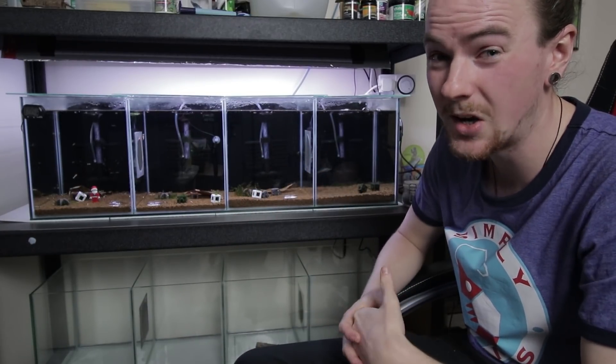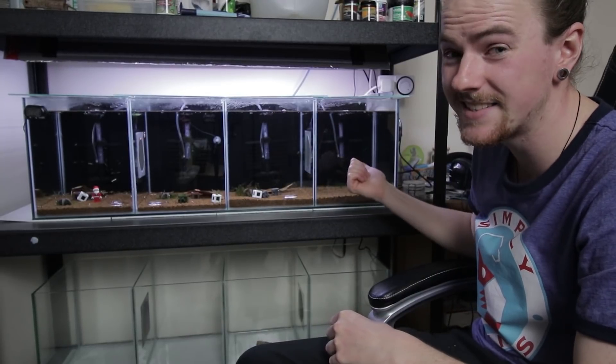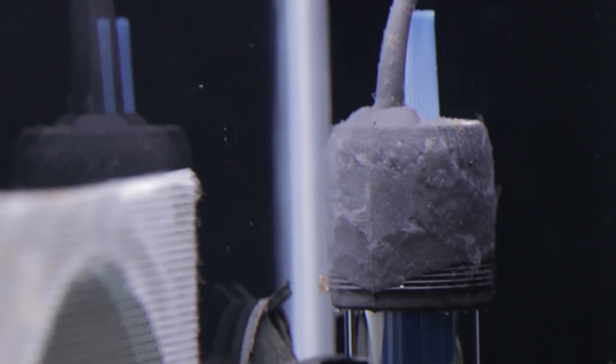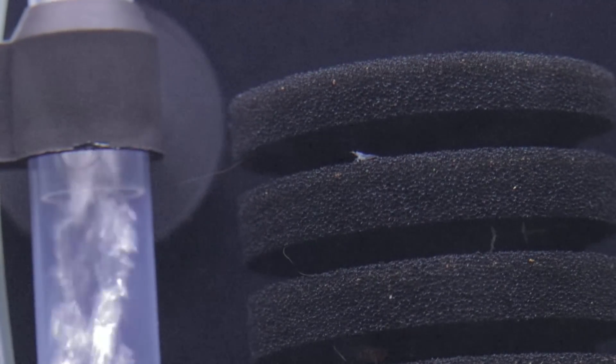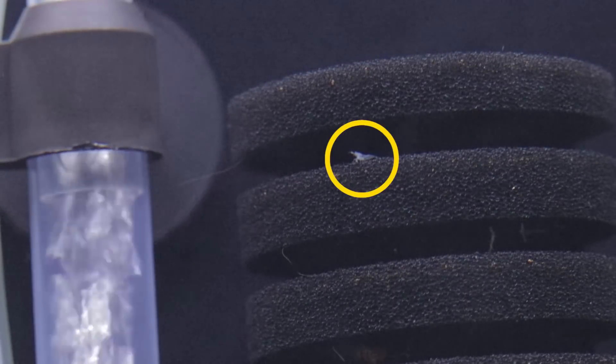So that day that I rage quit, well, I was looking in this tank here because there's some biofilm building up and obviously there's no shrimp in it, so it's not being eaten away. And on the sponge filter, what did I see? A teeny weeny, incy wincy, not spider, but shrimp.